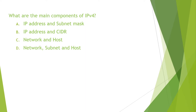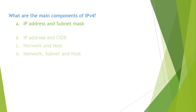What are the main components of IPv4? The main components of IPv4 are IP address and subnet mask. Therefore, the answer for this question is A. You can find the detailed explanation for this question in the video Introduction to Subnetting.